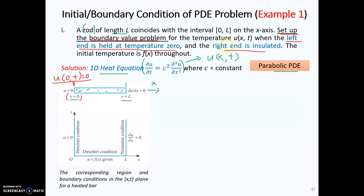There is insulation on the right end at x equal to L. When there is insulation, there is no heat transfer in that region. In this situation, the temperature gradient — the change of temperature with respect to the x dimension — will be equal to zero. Since the insulation is located at x equal to L, you write this as Ux(L,t) = 0, meaning the first derivative of U with respect to x at x equal to L for any time is equal to zero.